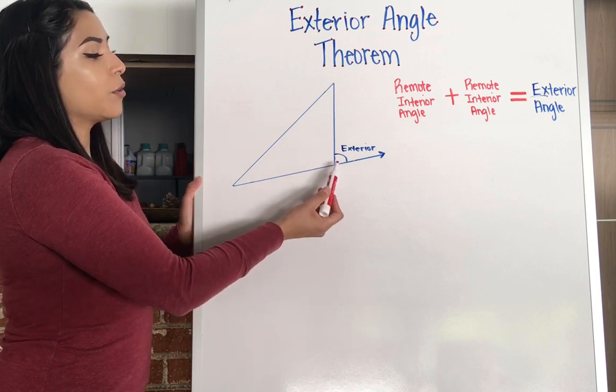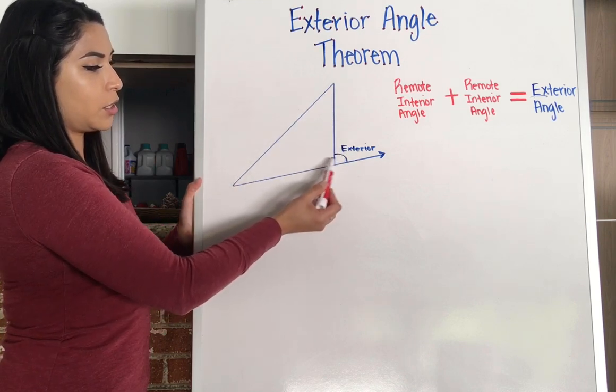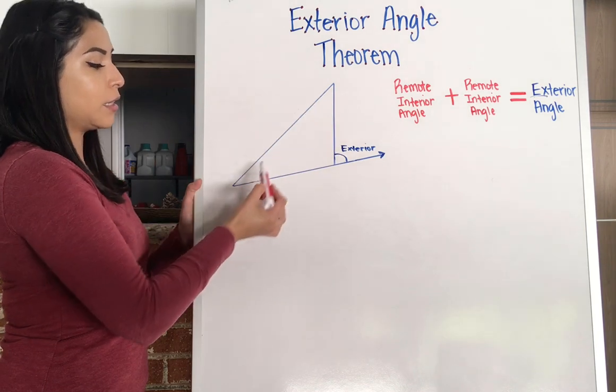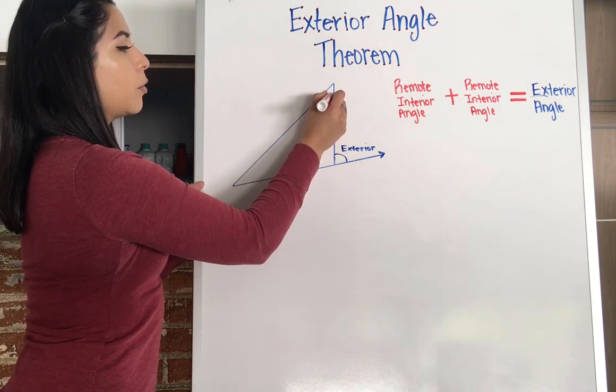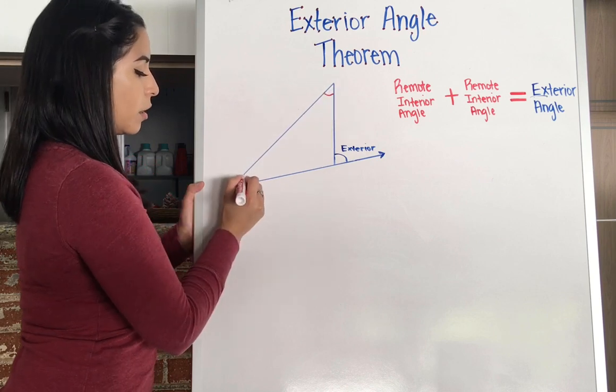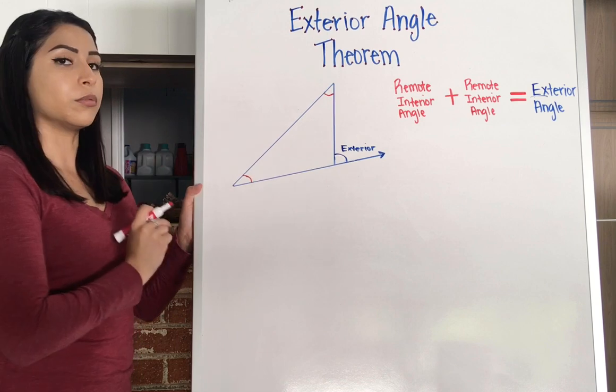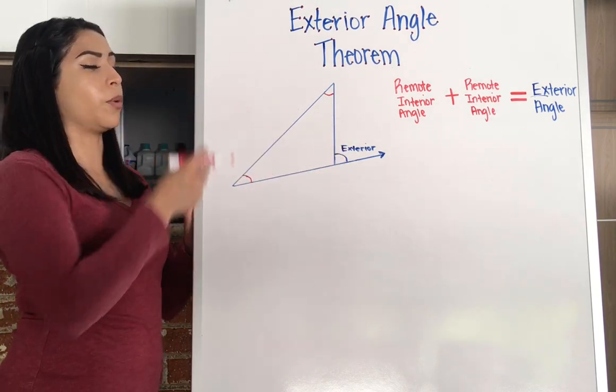So it's the two angles that are far away from the exterior. So not next to it, but the angles farthest from it and inside of the triangle. So this right here would be a remote interior angle. This right here would be a remote interior angle. Only those two are remote interior. They're inside the triangle and they're the farthest away from the exterior.